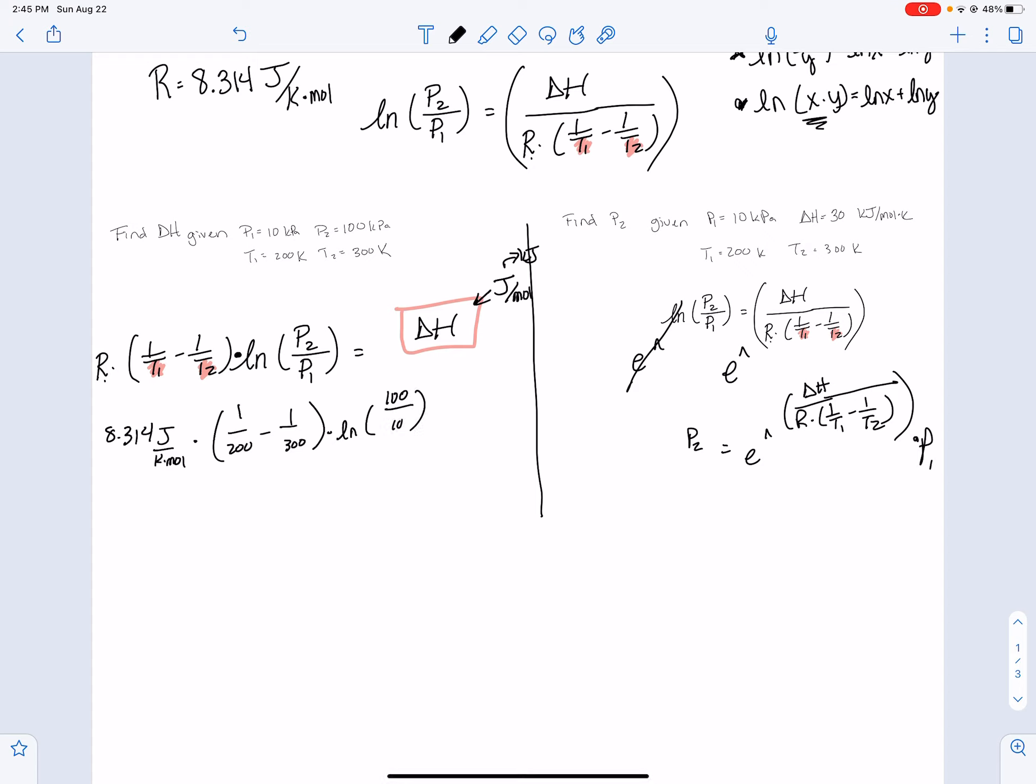So this would just be 1 over 200 minus 1 over 300 times the natural log of 100 over 10. Now, when you're putting this in your calculator, you should put a parentheses around that and a parentheses around that to be clear. And that will get you your answer. Just make sure you put all that in, just like that, into your calculator.